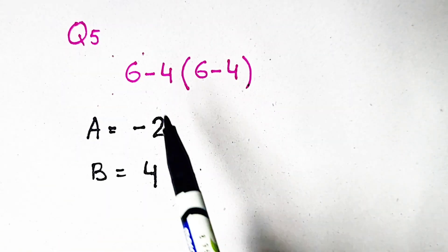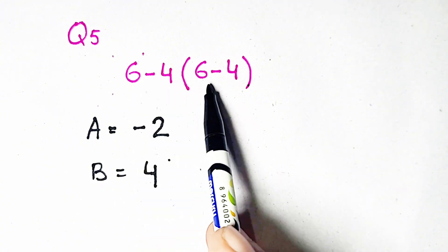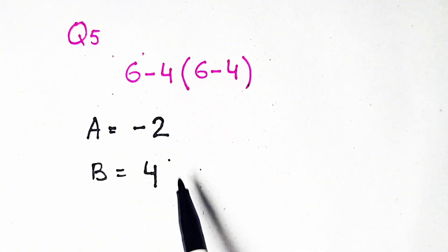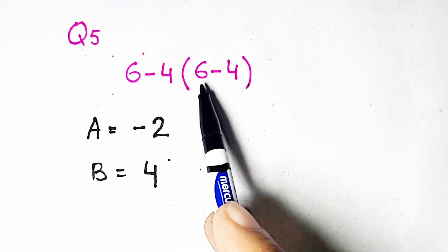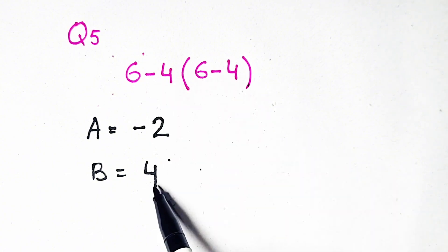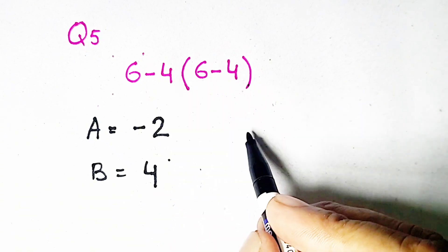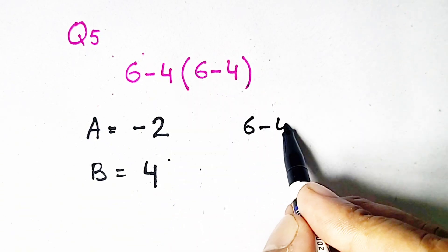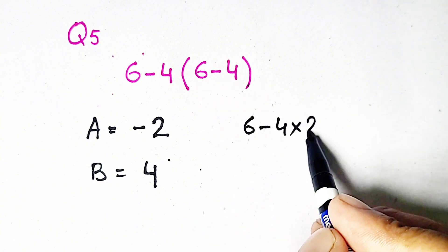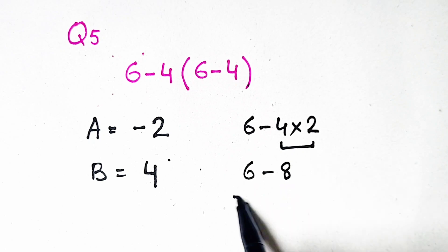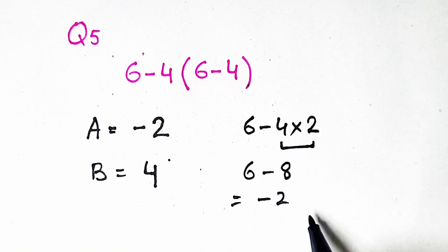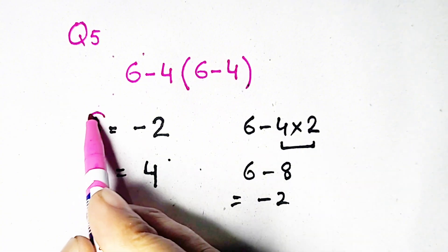Question number 5: 6 minus 4 times 6 minus 4. The answer options are minus 2 or 4. Some may think 6 minus 4 equals 2, then 2 times 2 equals 4, but remember that is not correct. We must multiply first: 4 times 6 equals 24, so 6 minus 24 minus 4, giving minus 2. Option A is correct.